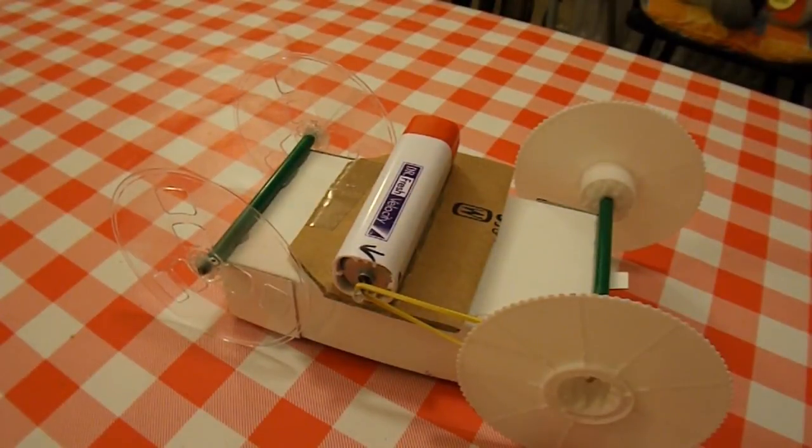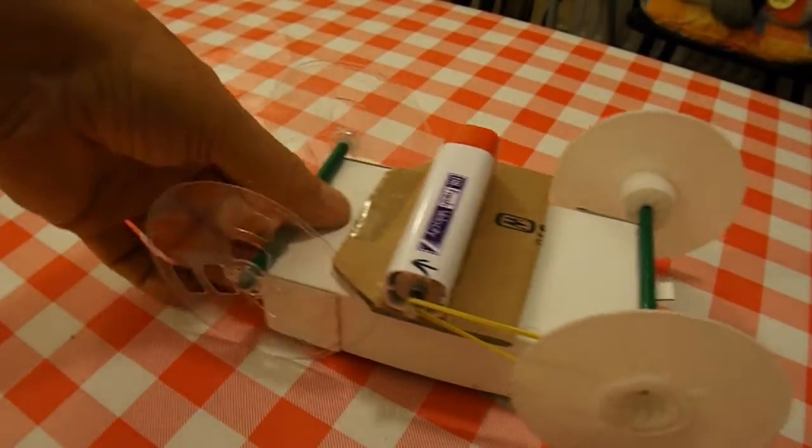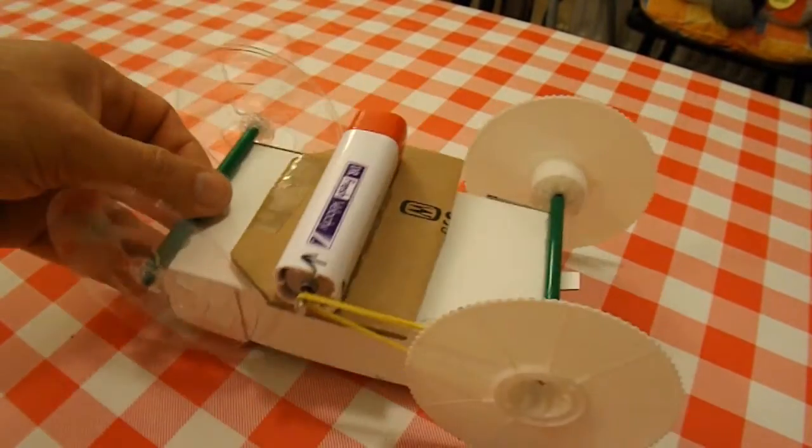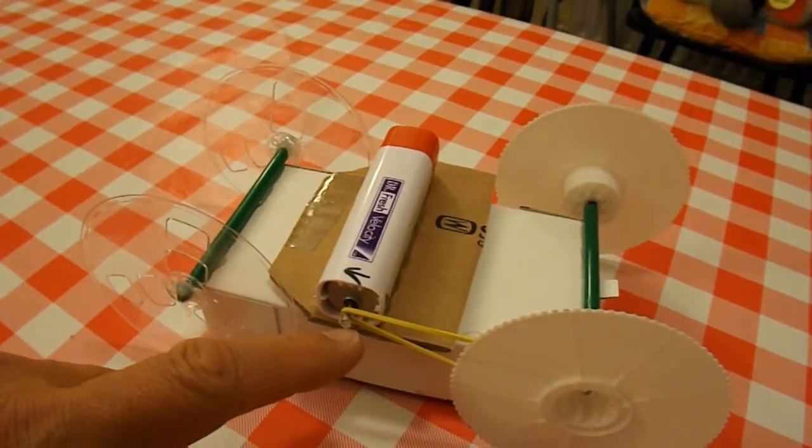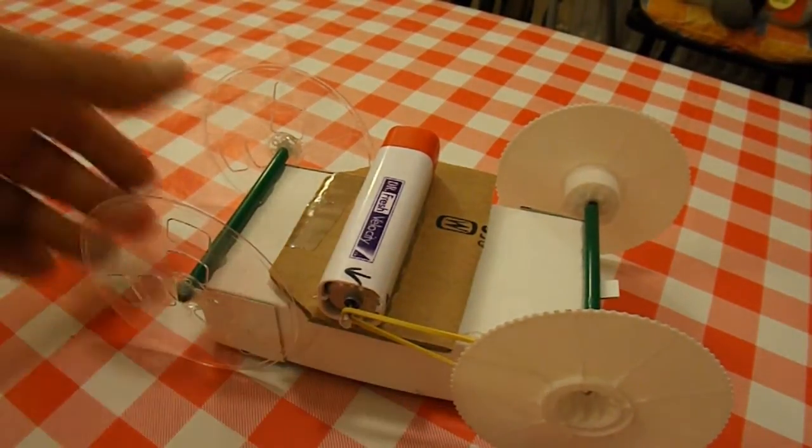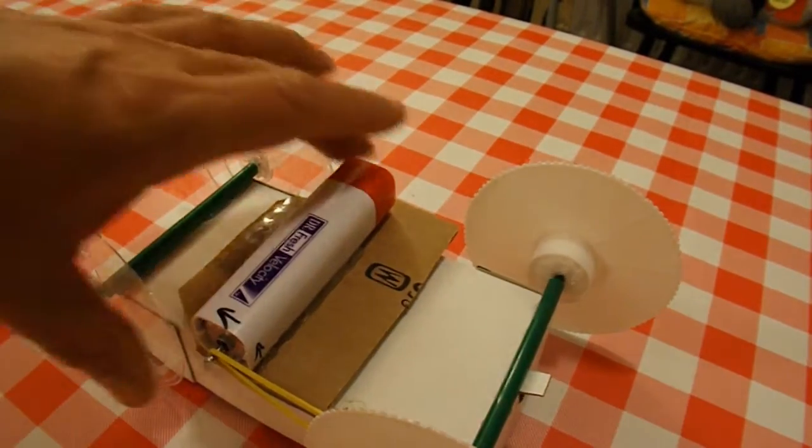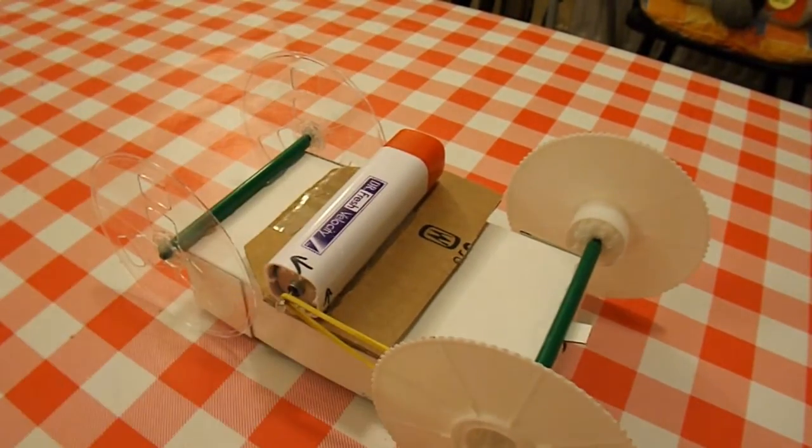So the summary is, those vibrating toothbrushes, the cheap ones, if you take the little weight off and just attach a rubber band, you can power all sorts of toy cars with it. That was fun.